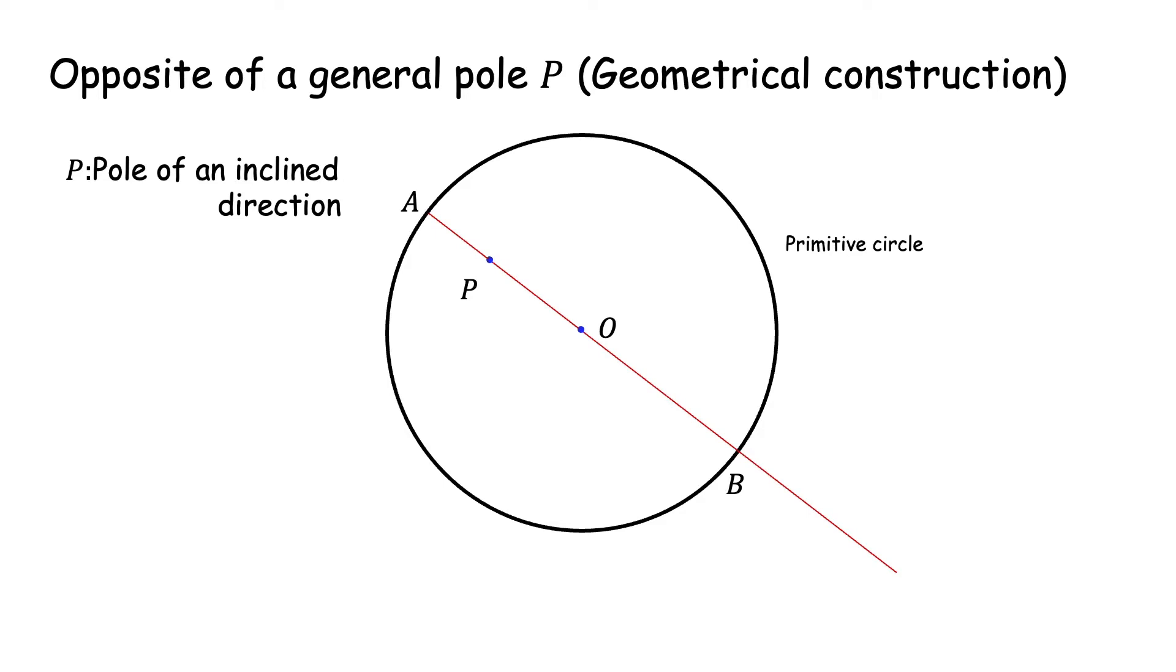Opposite of pole P will lie on this diameter and will come beyond B somewhere. To find where exactly it comes, we now draw the perpendicular diameter CD and we join CP and extend it to meet the circumference of the primitive circle at M. Now, from M, I draw another diameter of the primitive circle with M' as the diametrically opposite point.